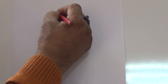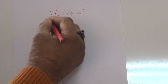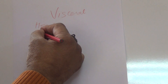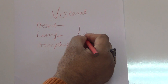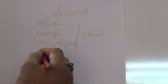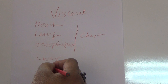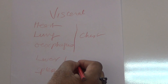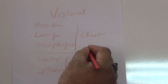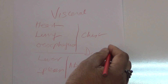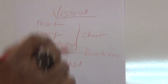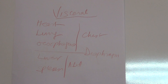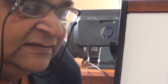The third problem in chest injuries is visceral injury. The viscera at risk include the heart, lung, and esophagus in the chest, and the liver and spleen in the abdomen; the diaphragm in between can also get injured. You must diagnose and manage these visceral injuries in severe chest injuries. This concludes our approach to a case of chest injury.